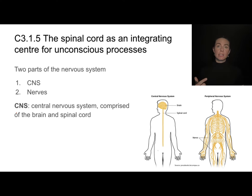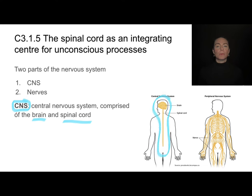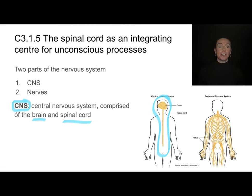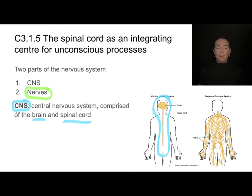Both the brain and the spinal cord make up the part of our nervous system called the central nervous system, or CNS. The CNS isn't just the brain — the spinal cord is also important. These are our major processing centers for information. Extending outwardly from the CNS is our set of nerves, sometimes referred to as the peripheral nervous system, which carry information to and from the central nervous system.